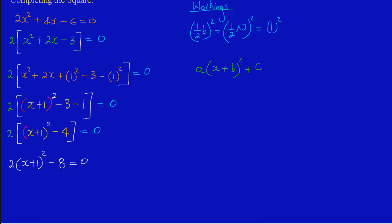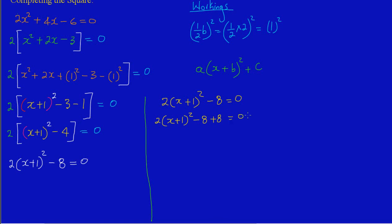Now I solve for x. I have 2 open bracket x plus 1 all squared minus 8 equals zero. I need to move the 8 to the other side, so I add 8 to both sides: 2 open bracket x plus 1 all squared minus 8 plus 8 equals 0 plus 8. The positive 8 cancels the negative 8, leaving 2 open bracket x plus 1 all squared equals 8.